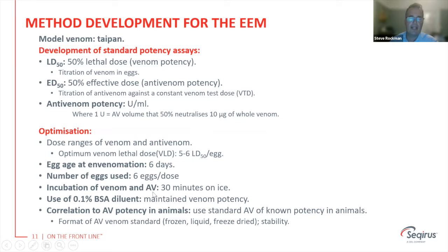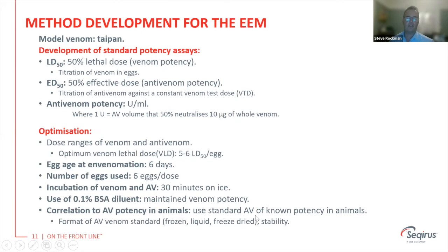We incubate the venom and antivenom for 30 minutes on ice and use a BSA or protein diluent to maintain venom potency. We then correlate this assay with potency in animals to ensure that our findings are consistent with what we've previously found over many decades of doing this work.